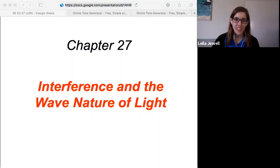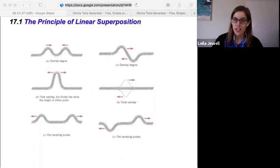Chapter 27, interference and the wave nature of light. For chapter 27, we're actually going to need a little bit of concepts from chapter 17, so going to a flashback 10 chapters. It's some new material, but we're just trying to take some of the concepts.